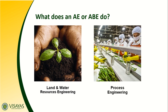Lastly, we have Process Engineering. In this specialization, we study the processes and machines required to convert agricultural raw materials into finished consumer goods. Also included here are post-harvest operations and processes which take place after harvesting — for example, the transportation, handling, and storage of the product, as well as processing down to the packaging of the product. These are the fields of specialization of an Agricultural and Biosystems Engineer.